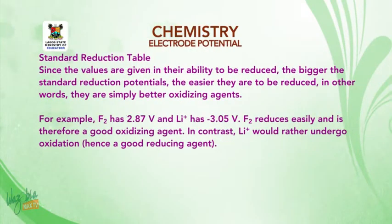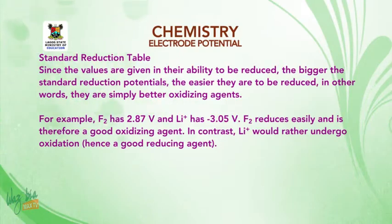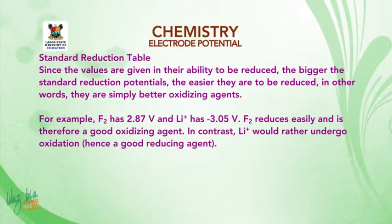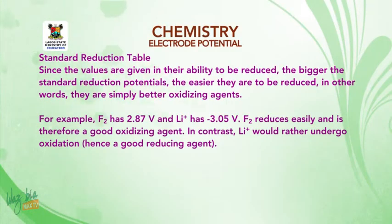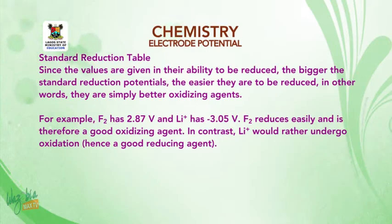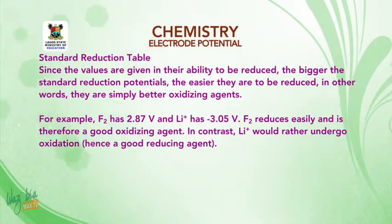The standard reduction table is also known as the electrochemical series. Since the values are given in their ability to be reduced, the bigger the standard reduction potential, the easier they are to be reduced — in other words, they are simply better oxidizing agents. For example, F₂ has +2.87 volts and lithium ion has −3.05 volts. F₂ reduces easily and is therefore a good oxidizing agent. In contrast, lithium⁺ will rather undergo oxidation, hence it is a good reducing agent.